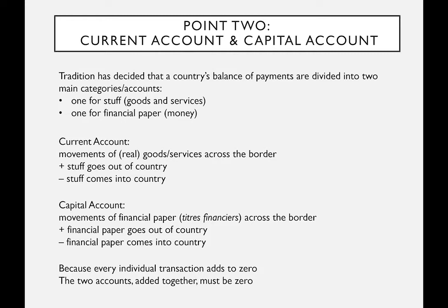The second point about balance of payments is that different categories — accounts — exist for recording transactions. Keeping it simple, there are two main accounts: the current account, for real goods or services, and the capital account, which records financial paper. Anything real coming into Canada is recorded under the current account as a minus; something real sent abroad is a plus. Financial paper coming in is a minus; financial paper leaving Canada is recorded under the capital account as a plus.